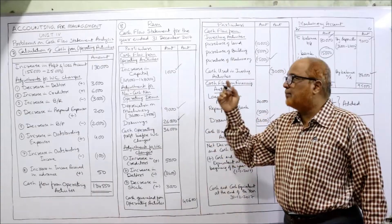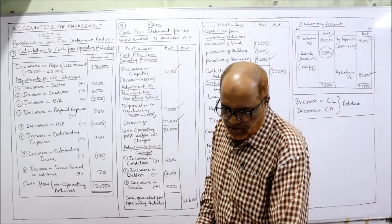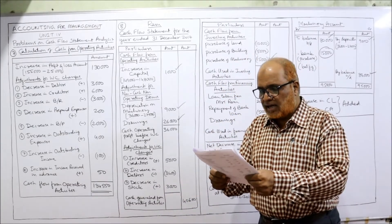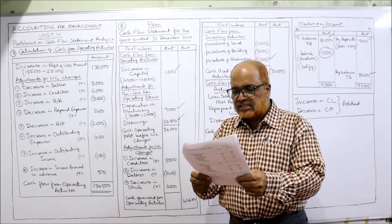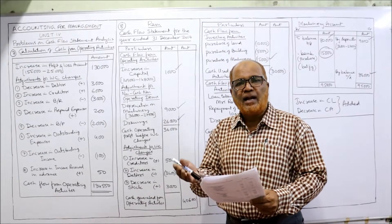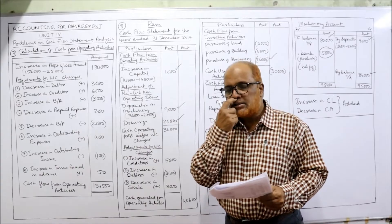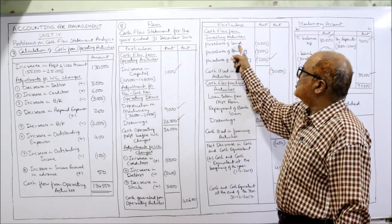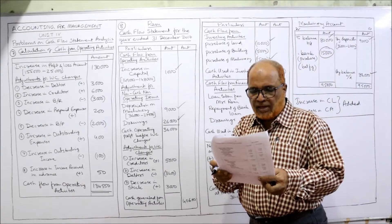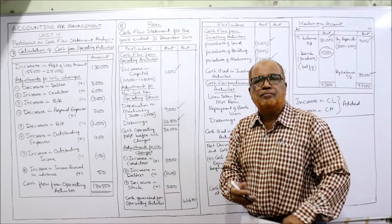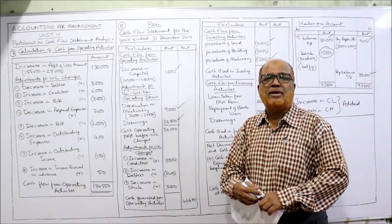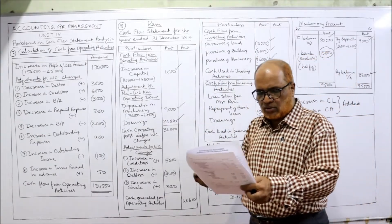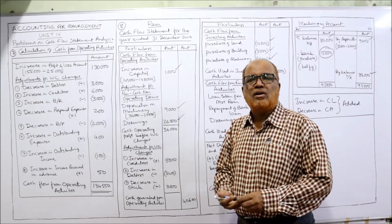Now for assets: cash opening and closing balance we take lastly. Debtor and stock are current assets. Land: last year 20,000, current year 30,000 — land value increased because further land was purchased during the year — investing activity. Purchase of land: 10,000 in bracket, cash outflow. Building: last year 50,000, current year 55,000 — increase on account of purchase. Purchase of building: 5,000. Machinery: purchase already taken as 15,000. We have now taken all items — next we find out the working capital changes.